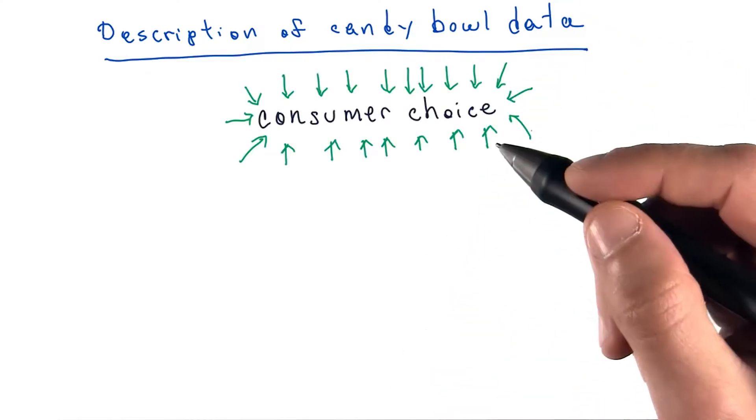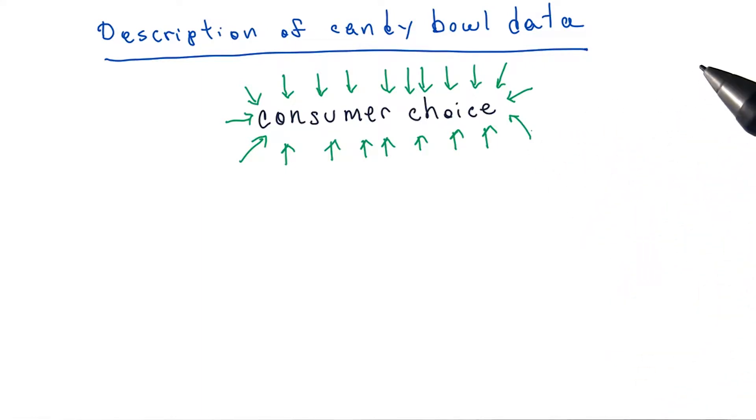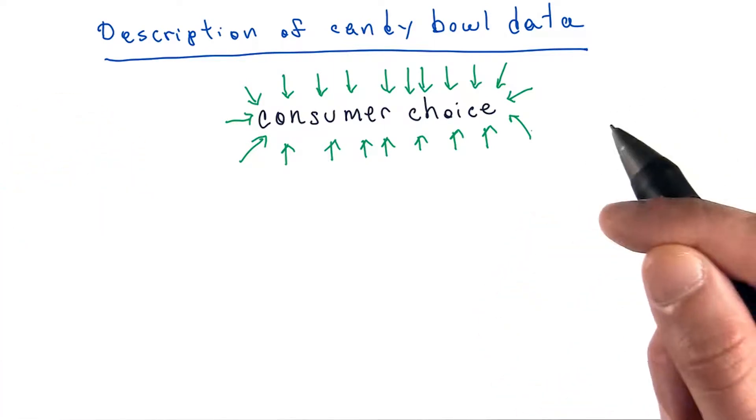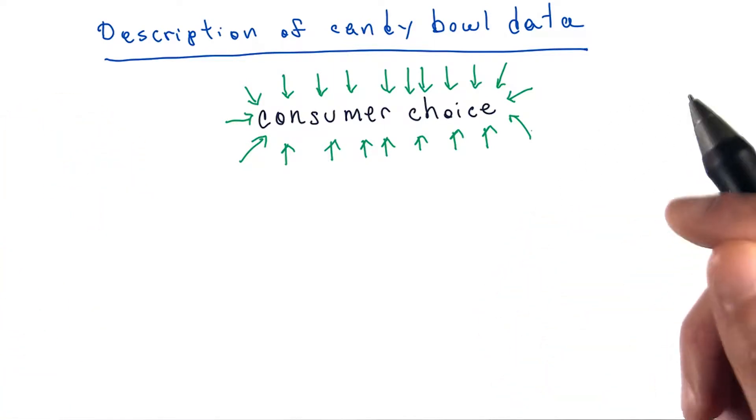If you recall, the goal is to understand what influences consumer choice. In this case, the influencers of candy selection. We elected to record any attributes which we thought might possibly have an impact on selection preference.